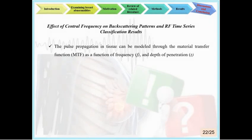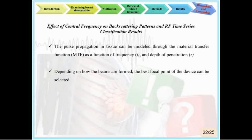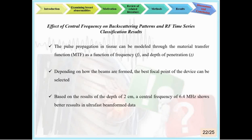Pulse propagation in tissue can be modeled through the material transfer function as a function of frequency and depth of penetration, so the echo pattern also depends on frequency. The result of different central frequencies indicates that both frequency and depth parameters should be evaluated together in RFTSDP. Based on results, at a depth of 2 cm, a central frequency of 6.4 MHz shows better results in ultra-fast beamformed data, which better characterizes different image lines than raw data. The highest increase in classifier accuracy was obtained by applying vibration at a depth of 2 cm with a central frequency of 6.4 MHz.